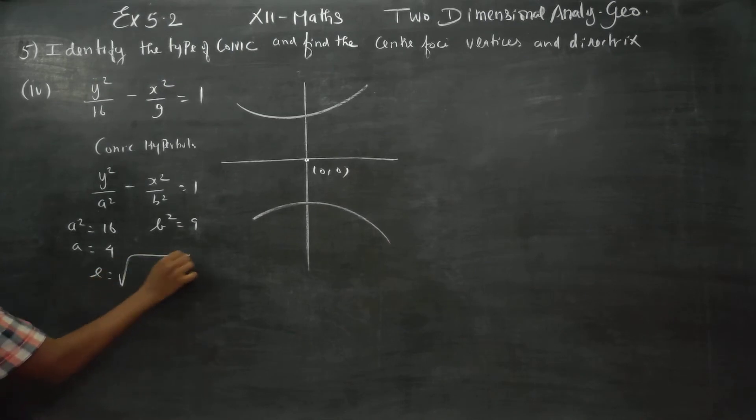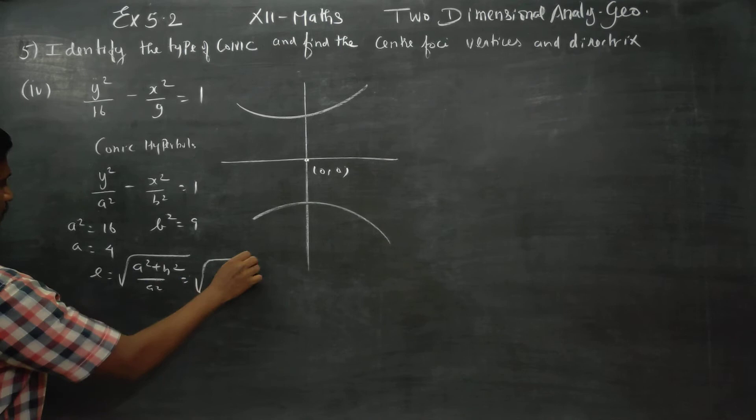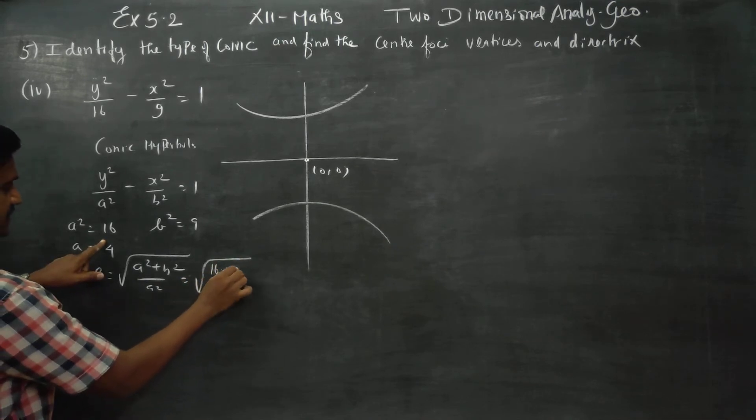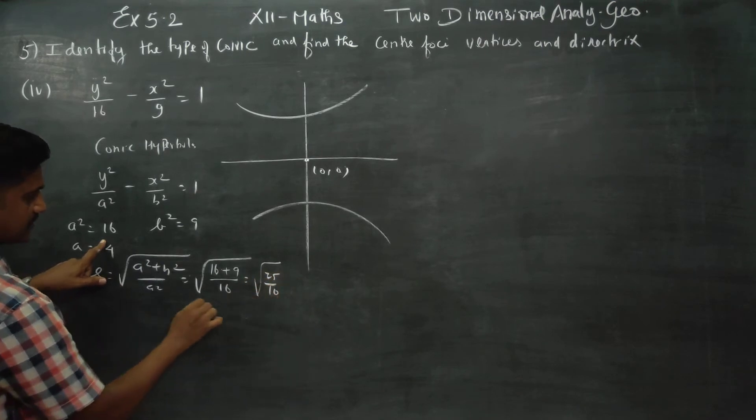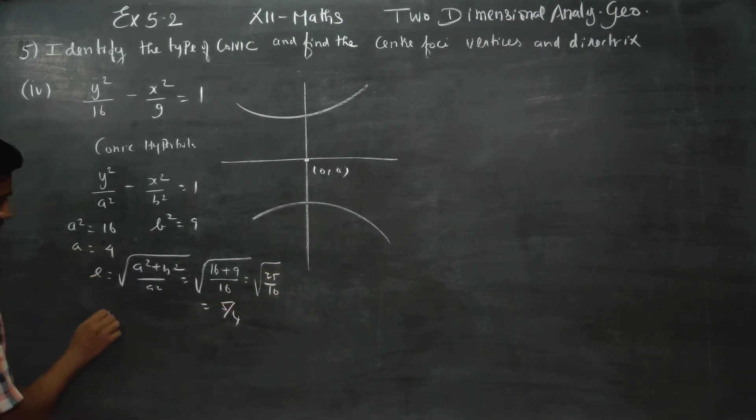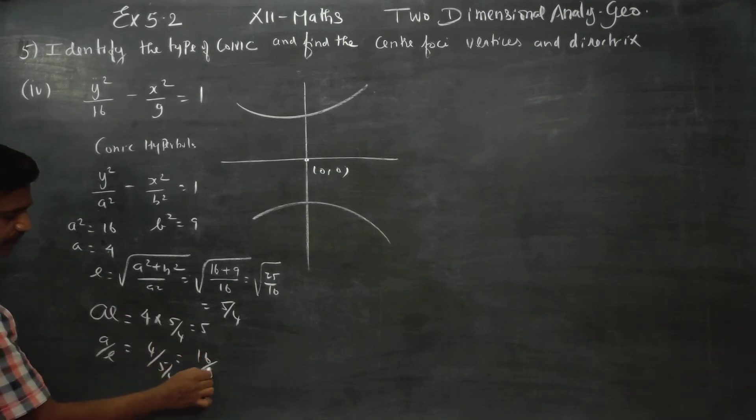For e, the formula is square root of a square plus b square by a square. Square root of 16 plus 9 by 16. You will be getting 25 by 16. Therefore, answer is 5 by 4. What is my a? A is 4. What is my e? 5 by 4. What is ae? Cancel, answer is 5. What is a by e? A is 4, e is 5 by 4, reciprocal gives 16 by 5.